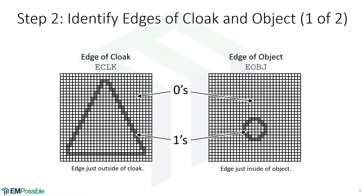The next step is to identify the edges. These become the boundaries where we'll solve Laplace's equation. I call that E_CLK for the edge of the cloak. Just like the other arrays, it's zeros everywhere except ones identifying where the edges are. For the edge of the cloak, I'm placing ones outside of the cloak region — where the white squares are within the triangular region, that's where the cloak was. We place the edge on the outside.